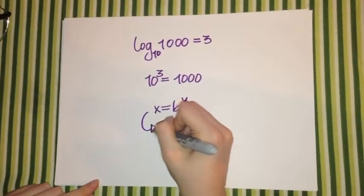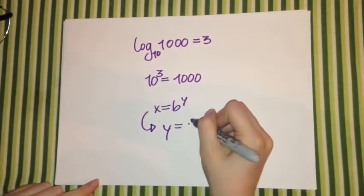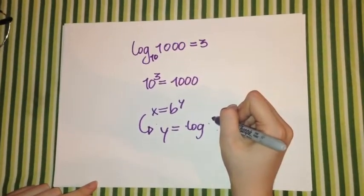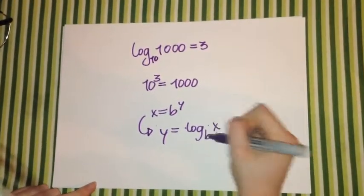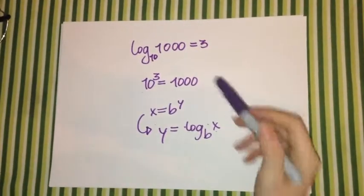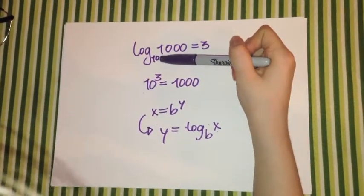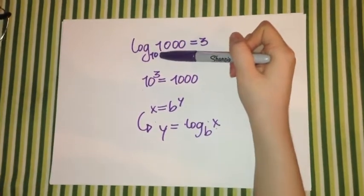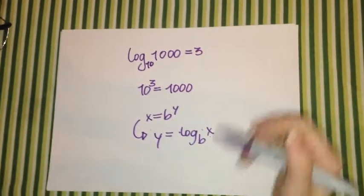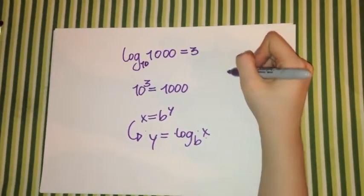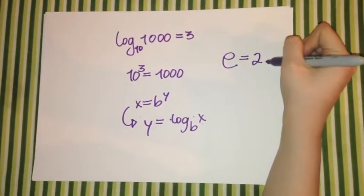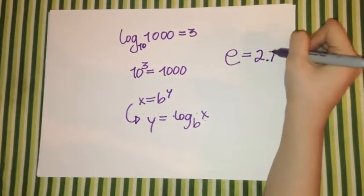The logarithm to base 10 is called the common logarithm and has many applications in science and engineering. And the natural logarithm has the irrational number e, which equals 2.718.